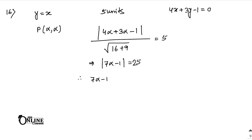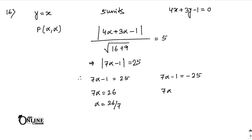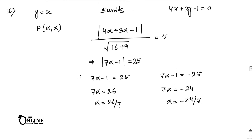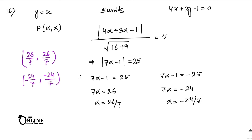So 7α minus 1 = 25 gives 7α = 26, so α = 26/7. And 7α minus 1 = minus 25 gives 7α = minus 24, so α = minus 24/7. Since the point is (α, α), the two answers are (26/7, 26/7) and (minus 24/7, minus 24/7).